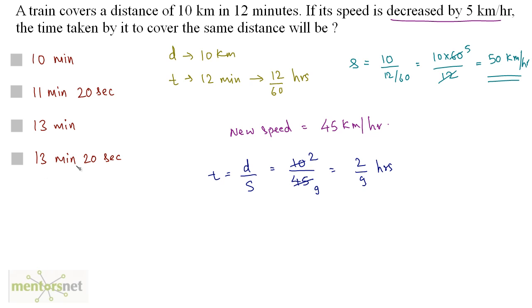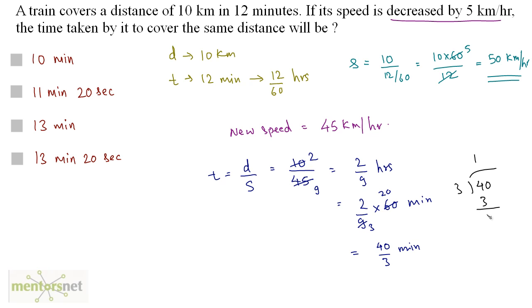None of the options are given in hours, so let us convert 2 by 9 hours into minutes. It is equal to 2 by 9 times 60 minutes. So 3 threes are 9, 3 twenties are 60, giving us 40 by 3 minutes. Dividing 40 by 3: 3 ones are 3, remainder 1, bring down 0, 3 threes are 9, remainder 1 — so 40 by 3 is equivalent to 13 and 1 by 3. One third of a minute is one third of 60 seconds, which is 20 seconds. So 13 minutes 20 seconds is the correct answer.